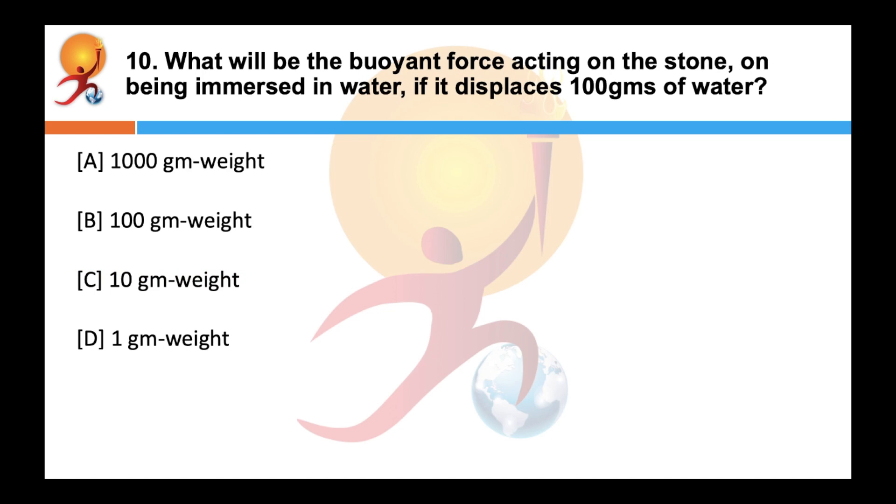What will be the buoyant force acting on the stone on being immersed in water if it displaces 100 grams of water? Correct answer is B, 100 gram weight. Again, as per Archimedes principle, if a stone on being immersed in water displaces 100 grams of water, the buoyant force exerted or acting on the stone will be equal to 100 grams weight.